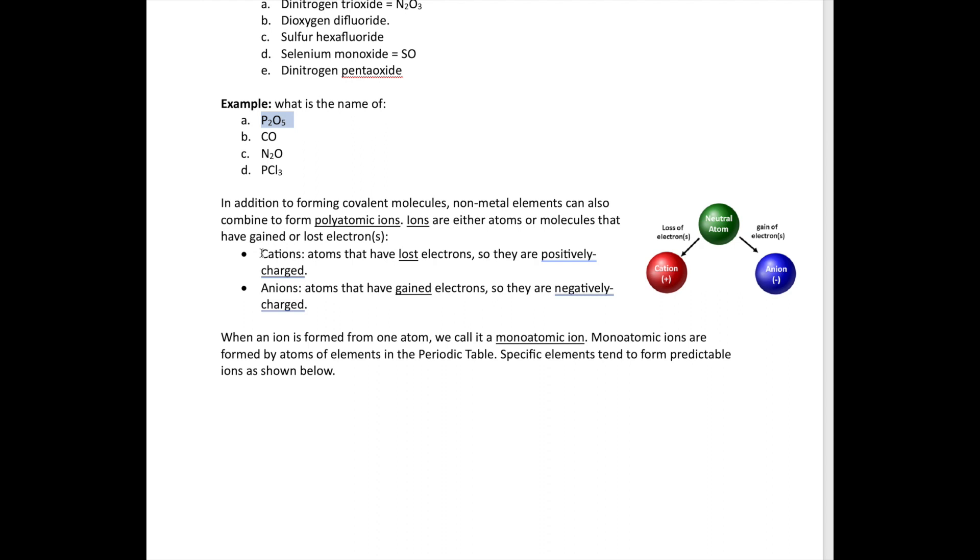So we define two types of ions. Cations are atoms that have lost electrons. Electrons are negatively charged. The cations are positively charged. Anions, on the other hand, are atoms that have gained electrons. So anions are negatively charged.